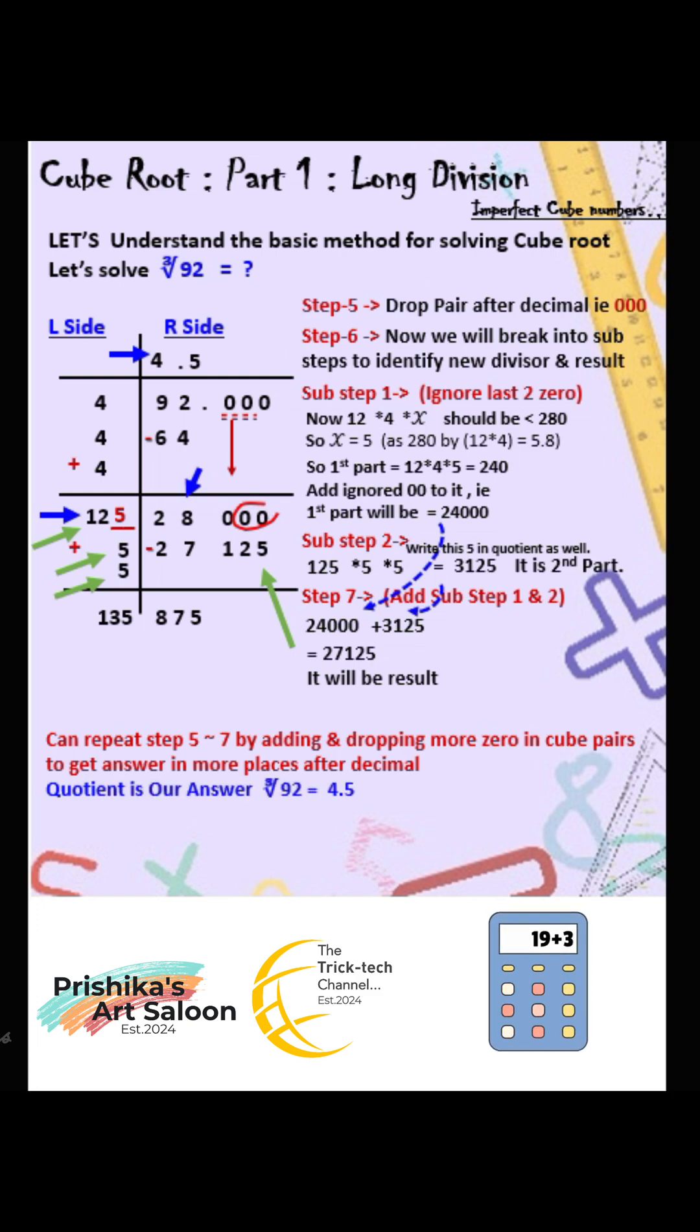However here quotient is our answer, so cube root 92 equals 4.5. Hence done. Stay tuned for part 2 quick trick to solve cube roots.